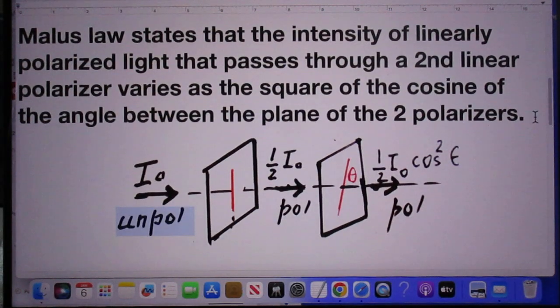He follows Malus's law. Malus's law states that the intensity of linearly polarized light that passes through a second linear polarizer varies as the square of the cosine of the angle between the plane of the two polarizers.